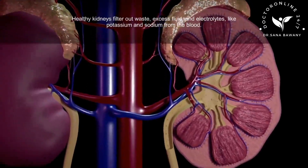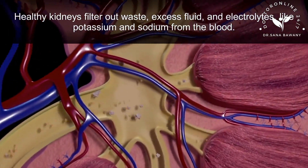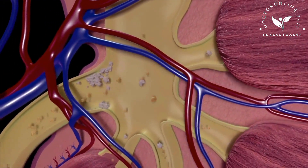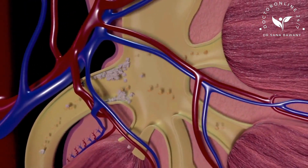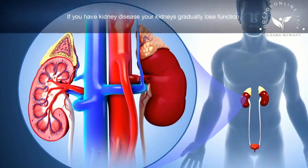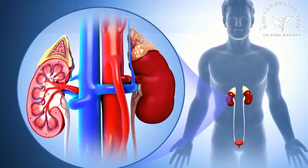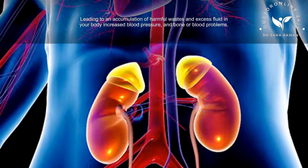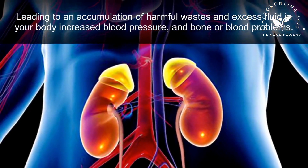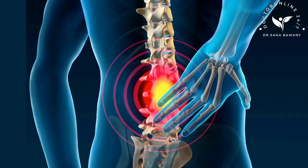Healthy kidneys filter out waste, excess fluid, and electrolytes like potassium and sodium from the blood. These waste products exit the body through the urethra in the form of urine. If you have kidney disease, your kidneys gradually lose function, leading to an accumulation of harmful wastes and excess fluid in your body, increased blood pressure, and bone or blood problems.